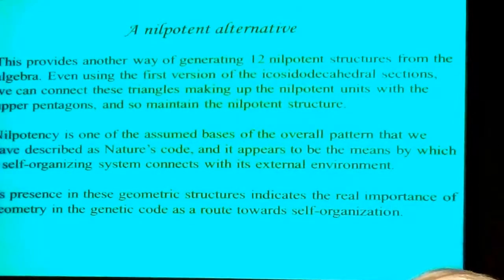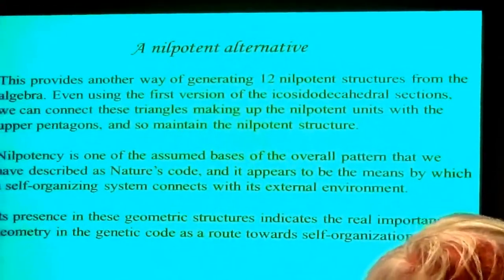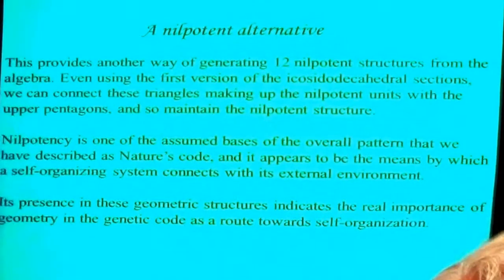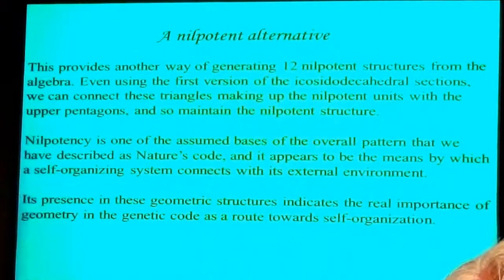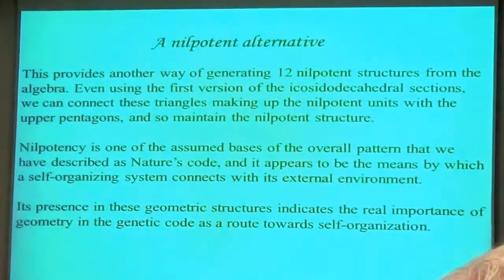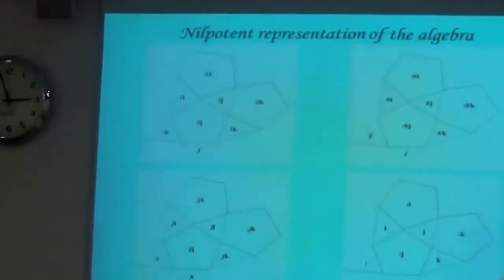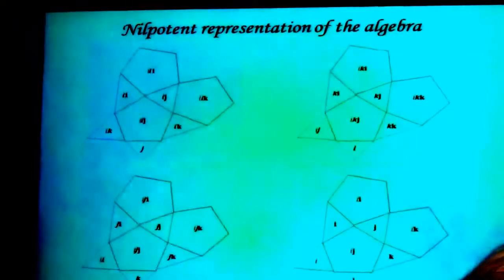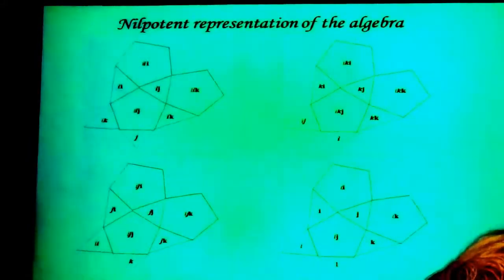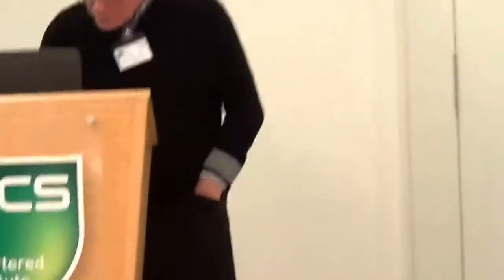If I did this in terms of the charges, I would explain why we get SU(2) for that one, SU(3) for this one, and U(1) for that one — so I'd explain the structure of the standard model, but that's for another time. We can have a set of nilpotent units. It appears that we have the means by which a self-organizing system connects to its environment — this nilpotency, this squaring to zero. One is the object, one is the environment, this negative version.